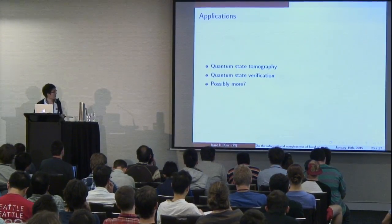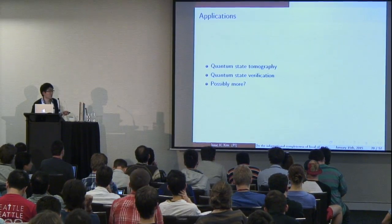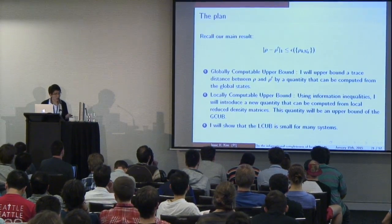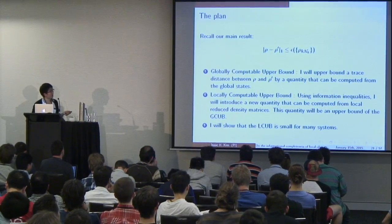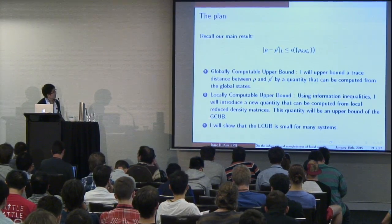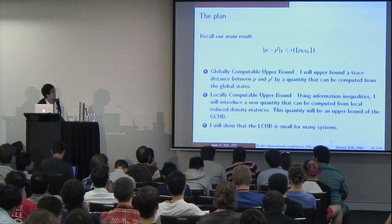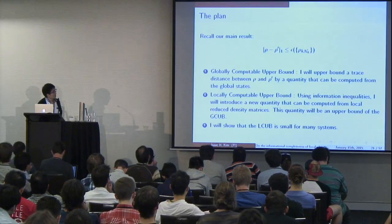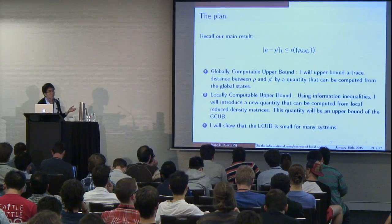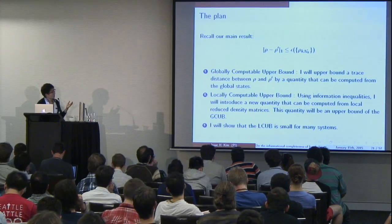The applications are pretty straightforward once we have that result. It'll be useful for quantum state tomography, state verification, and possibly more. The plan for the rest of the talk is to explain how this bound works. There are primarily three different stages: the first two are intimately related to each other and are used to explain the inequality, while the third is orthogonal and is used to show that plugging certain systems into the inequality yields a non-trivial result. For the moment, let's just focus on the first two.